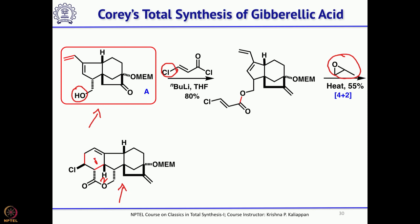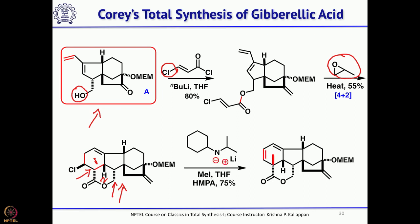Looking at this molecule, what is missing is that in Gibberellic Acid you need one methyl group here, and this CH2O should be oxidized to COOH. For that, first it was treated with an LDA equivalent — LDA is lithium diisopropyl amide. Instead of one isopropyl group, if you replace it with a cyclohexyl group, you get this amide. This amide generates an anion, and upon quenching with methyl iodide, you introduce the methyl group.